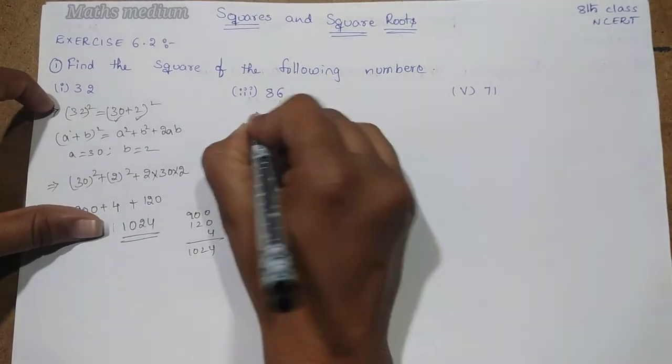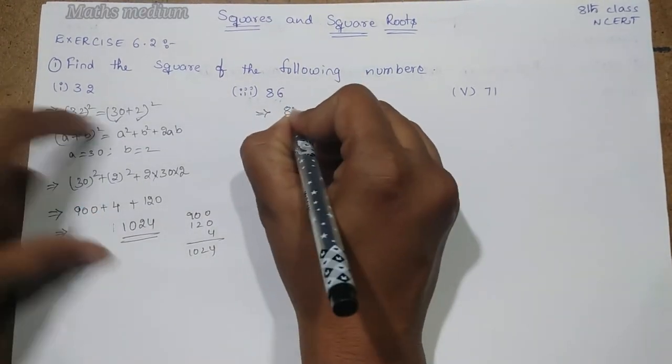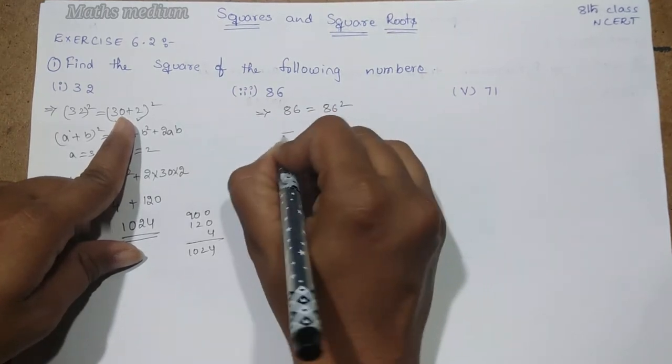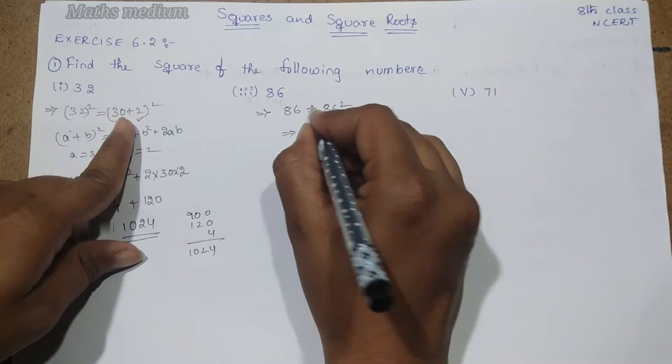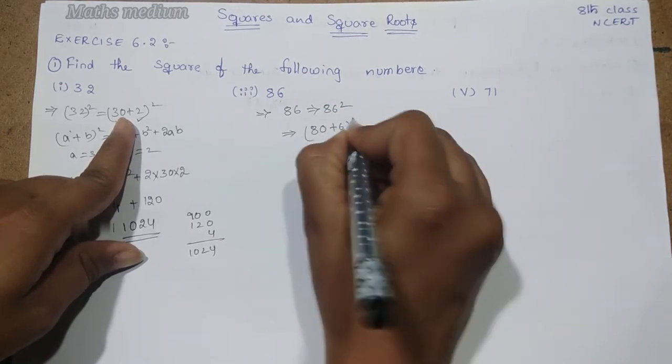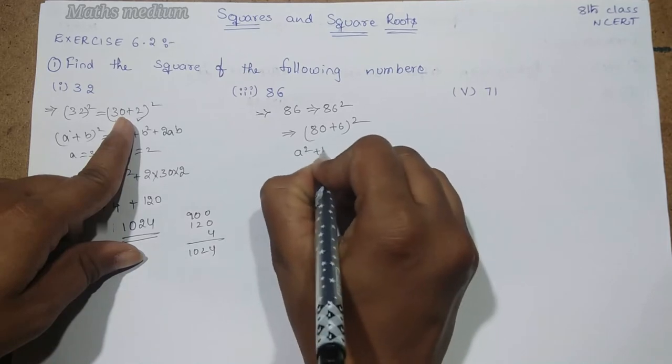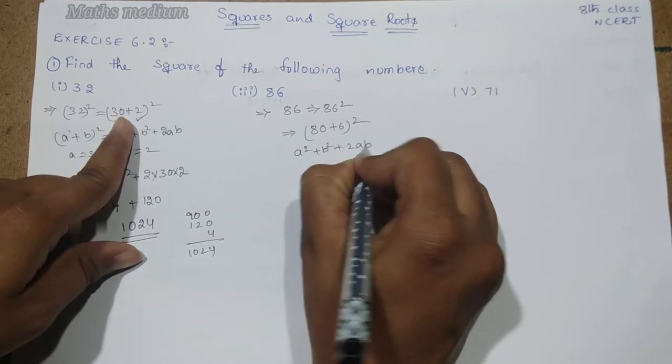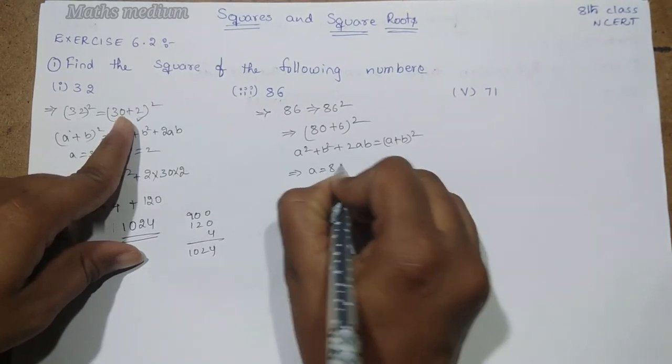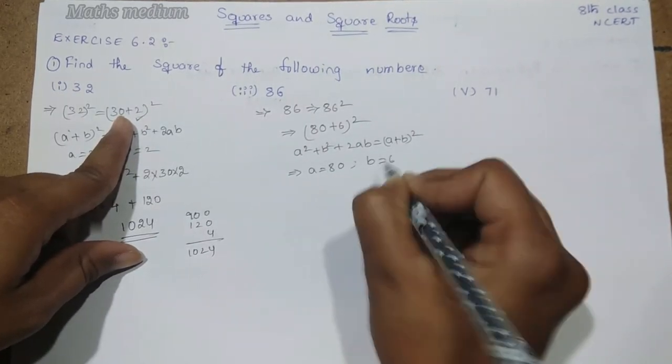Next, coming to 86. This is the same like this. 86 square. We have to find the square, right? So I am writing it as 80 plus 6 whole square. Apply the formula a square plus b square plus 2ab. Here a is equal to 80 and b is equal to 6.